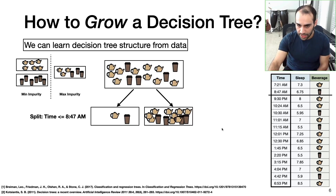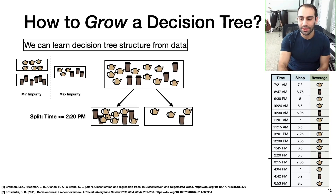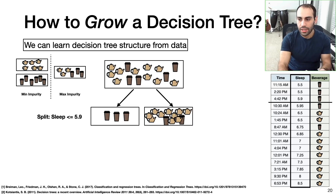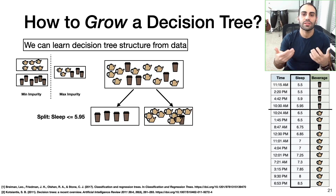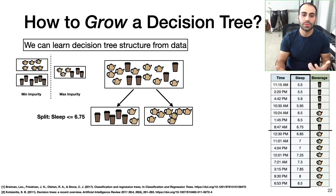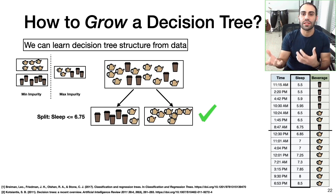We continue this process — splitting on 8:47 a.m., calculating the average Gini impurity, then 9:30 a.m., and so on for every possible value of time in the dataset. We do the same for amount of sleep, evaluating splits at 5.5, 5.9, 5.95 hours, and so on. Let's say after doing this, we discover that the split option of sleep less than or equal to 6.75 hours is the optimal value — giving the smallest Gini impurity of all possible split options.